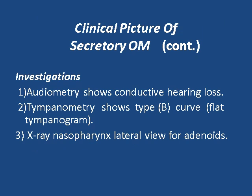Investigations for otitis media with effusion: for hearing assessment, we need audiometry and tympanometry. Audiometry will show conductive hearing loss, while tympanometry will show a type B tympanogram. X-ray nasopharynx lateral view is needed to exclude adenoids, as they are the commonest cause of Eustachian tube obstruction, especially in children.